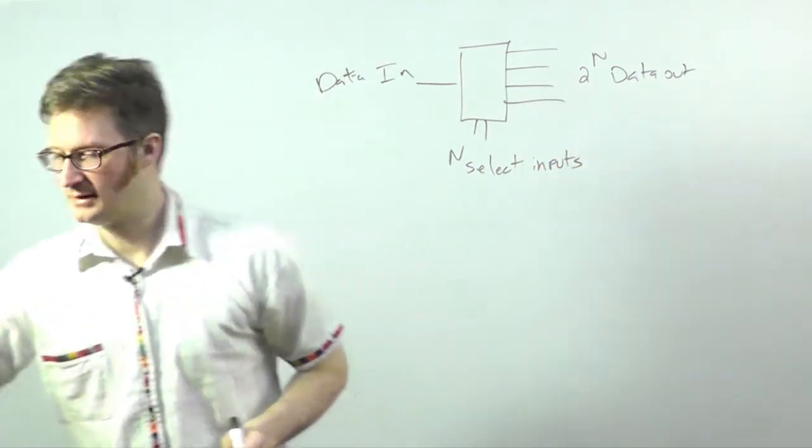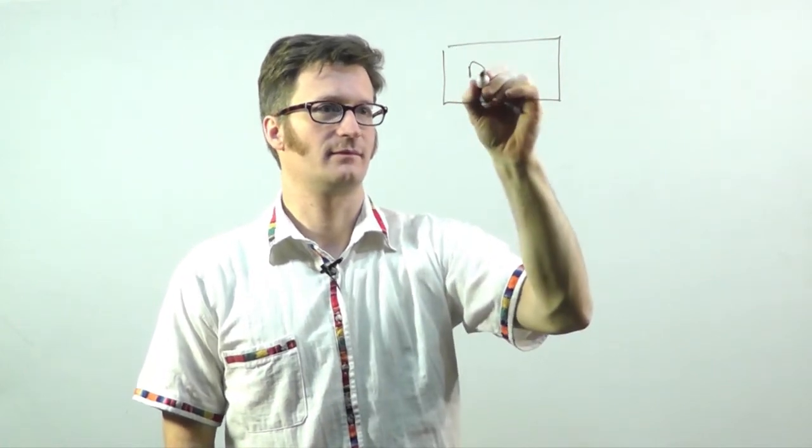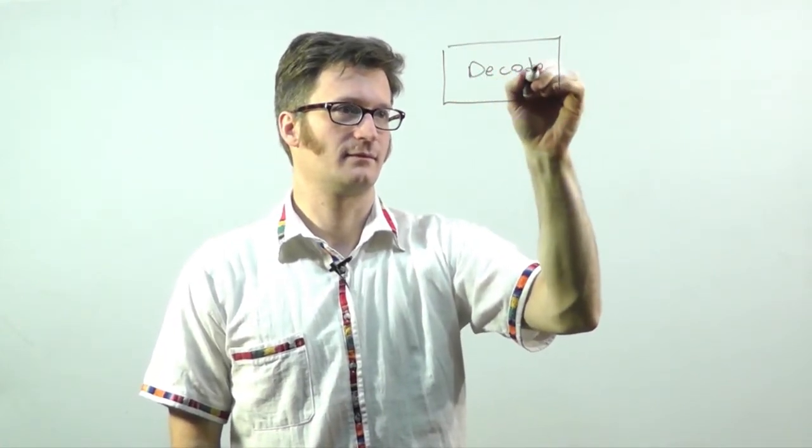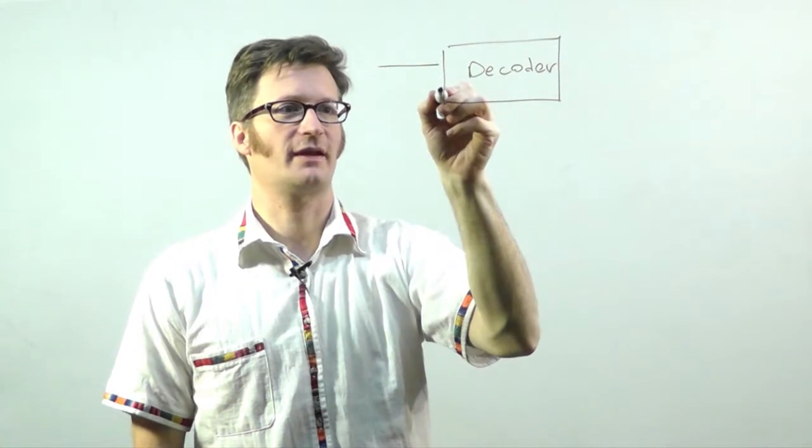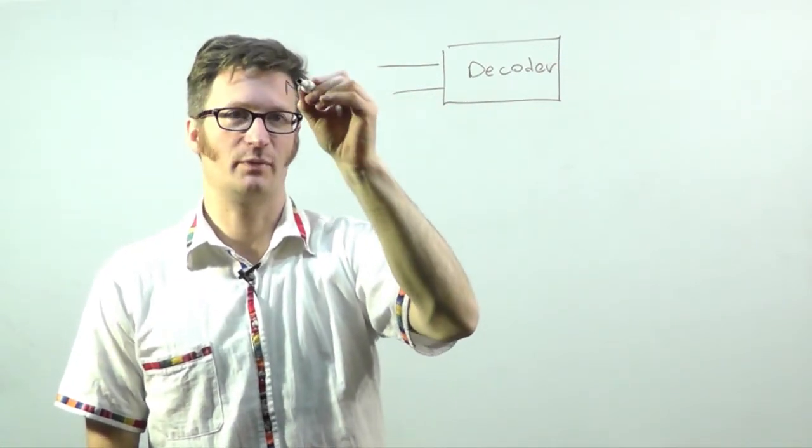Okay, let's take a look at how it's built internally. So just like the multiplexer where it had a decoder, we have two select inputs or n select inputs.